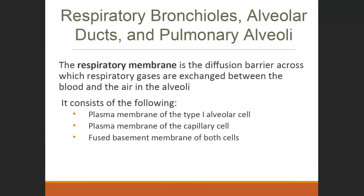The respiratory membrane is important because two different epithelial linings take part. On one hand we have our type 1 alveolar cells — simple squamous epithelial tissue — and on the other we have the epithelial cells making up the wall of the capillary. When we discussed diffusion previously, we noted that distance traveled is an important variable in diffusion rate: the further something has to diffuse, the longer it takes.